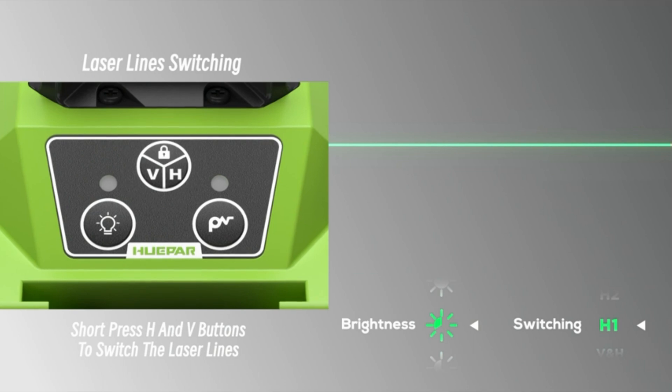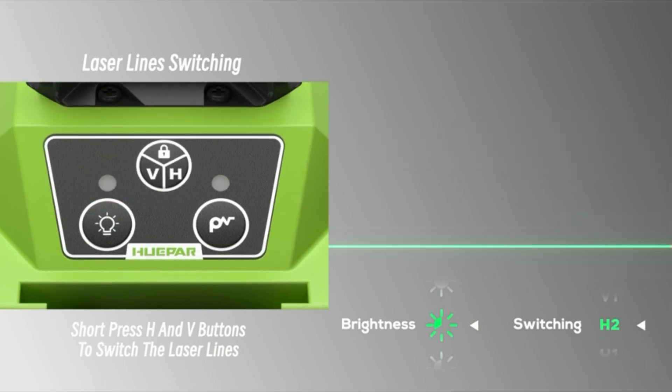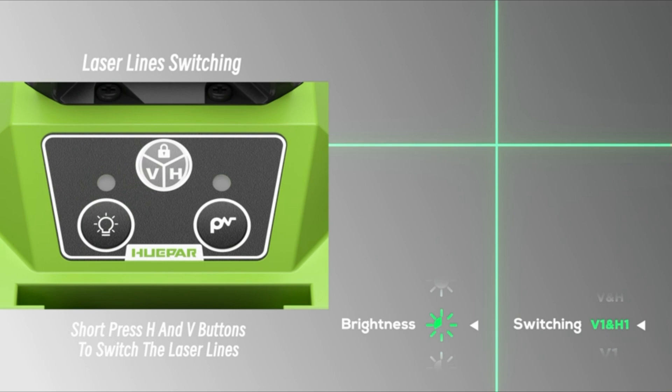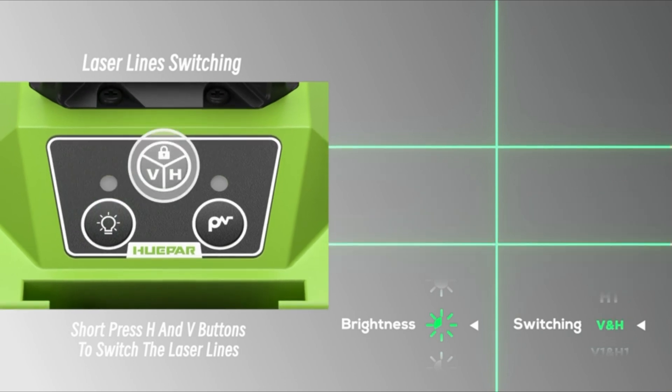And the 360 degrees horizontal and 360 degrees vertical lines intersect at an angle of 90 degrees to help you quickly visualize and complete the square layout.